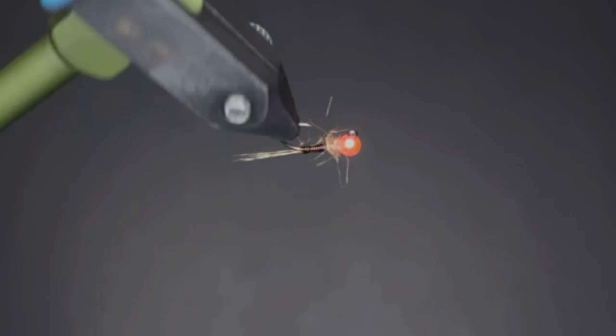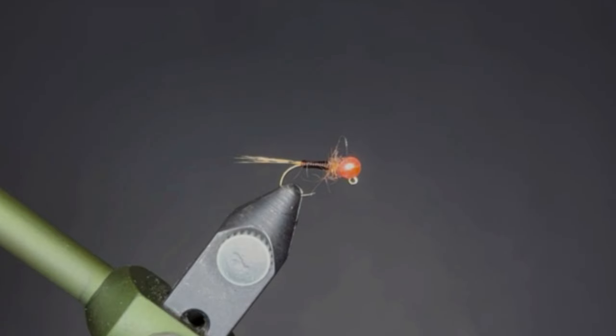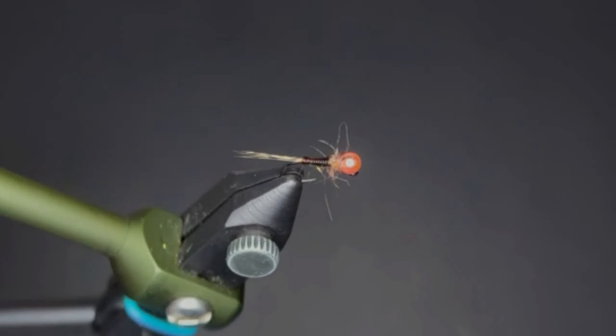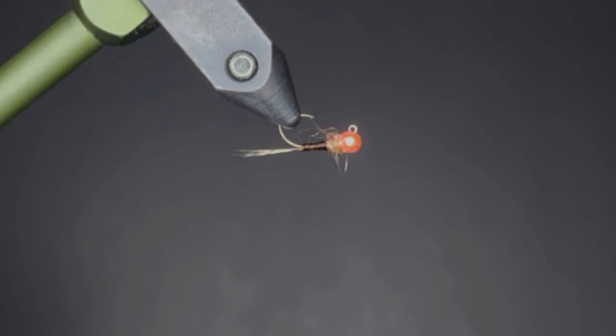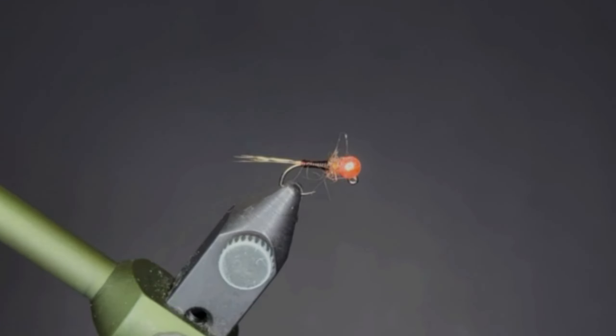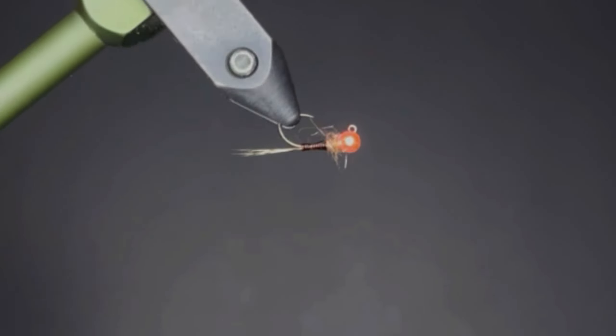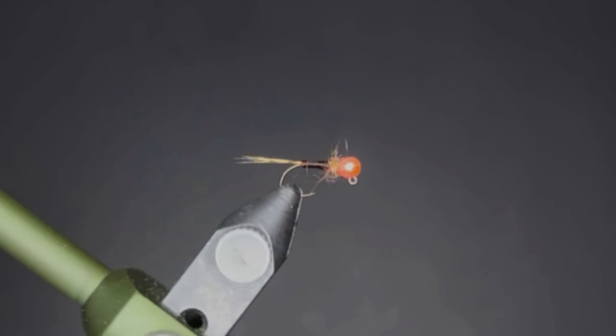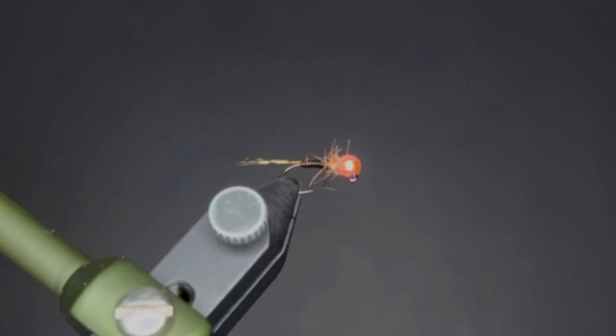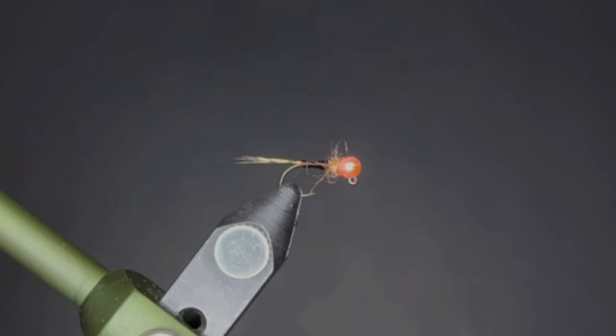This is a super effective fly you can tie in all kinds of different color variations. This one I'm going with a pink bead and brown stretch tubing with some darker flash or ice dub for the collar. It has a CDL tail, super simple and super effective.